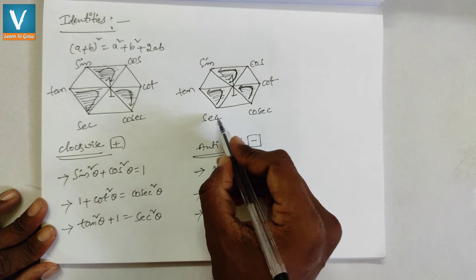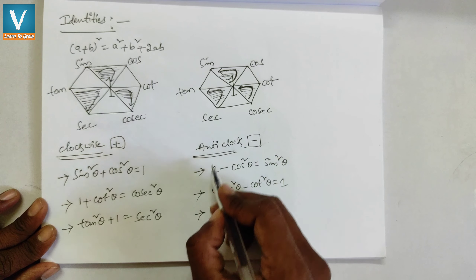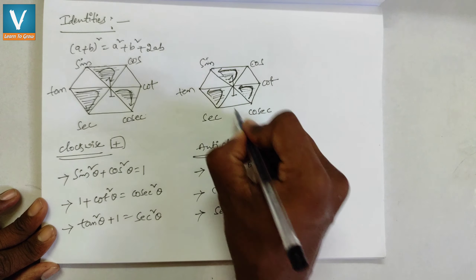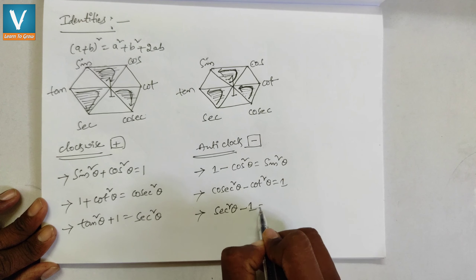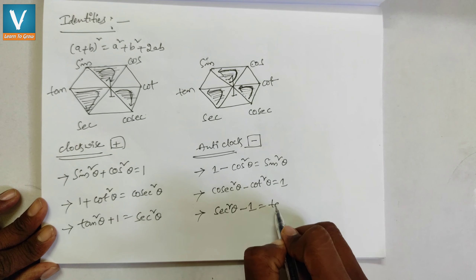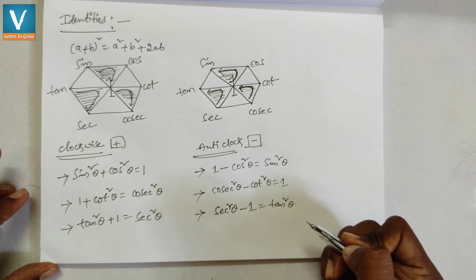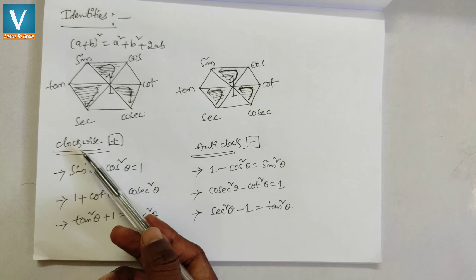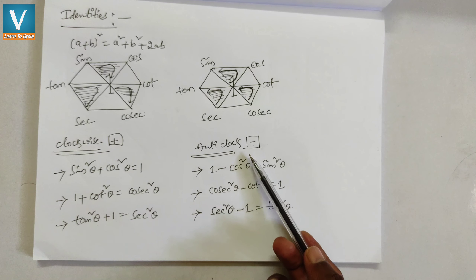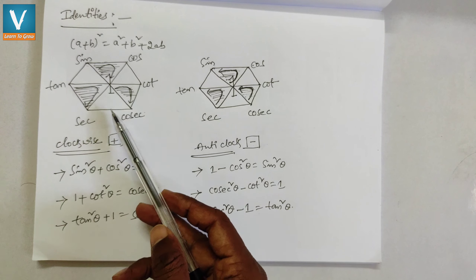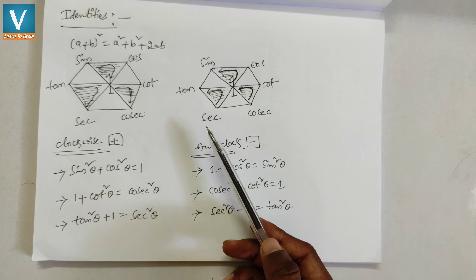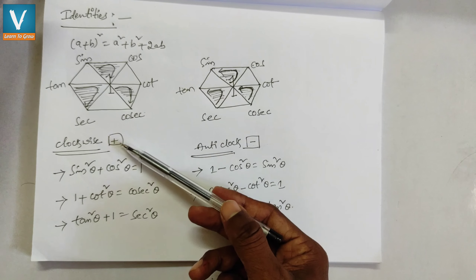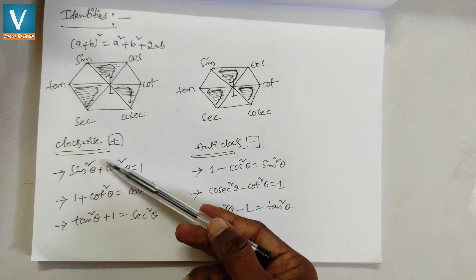Check the starting and ending direction carefully. Going anti-clockwise from sec: sec²θ minus 1 equals tan²θ. So we obtained all the identities from both the clockwise and anti-clockwise directions using the hexagon method. It is a very easy process to know and remember trigonometric identities.